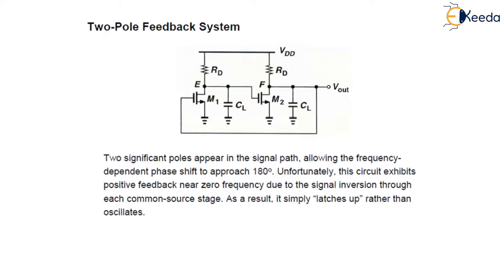Let us see the two pole feedback system. The two significant poles appear in the signal path — you can see there are two capacitors used. Thus, two poles appear in the signal path which allows the frequency dependent phase shift to approach 180 degrees, because 90 plus 90 equals 180 degrees.